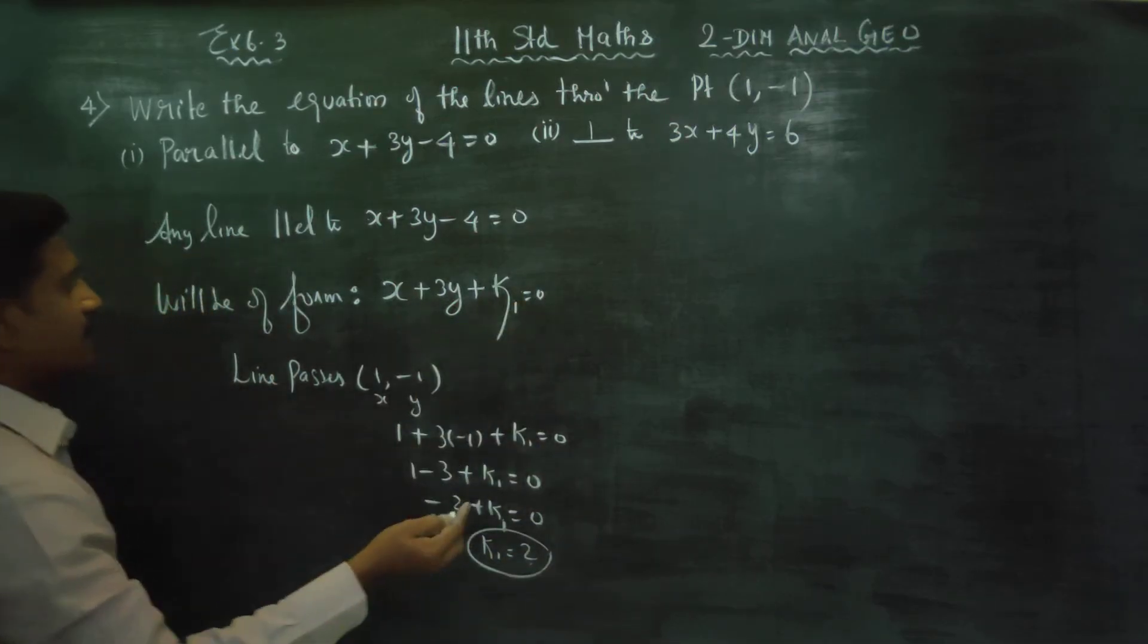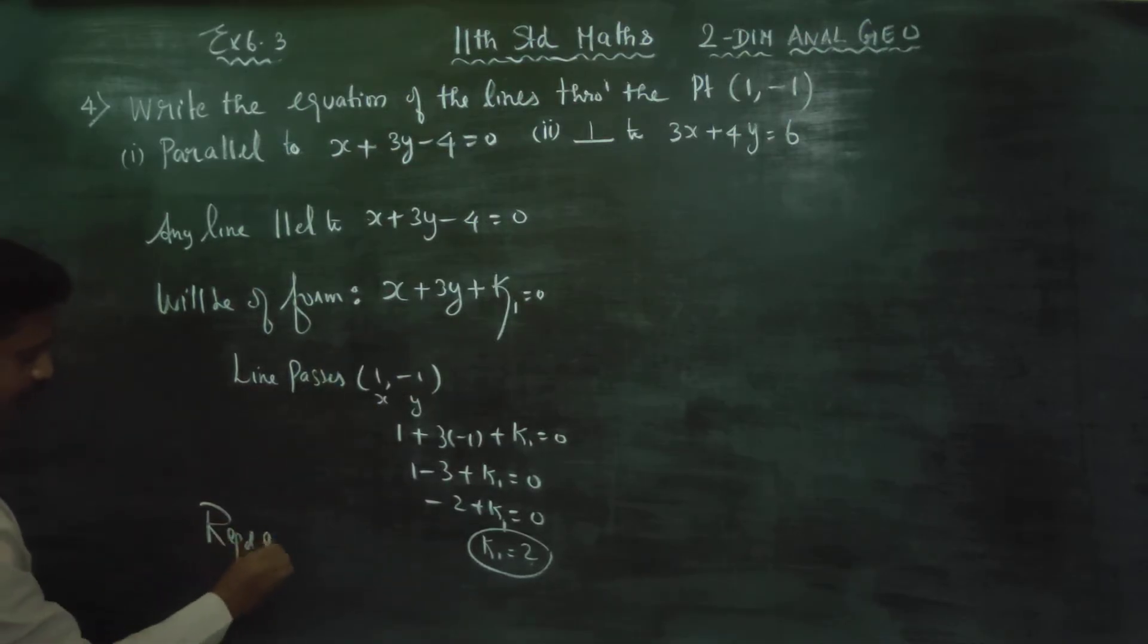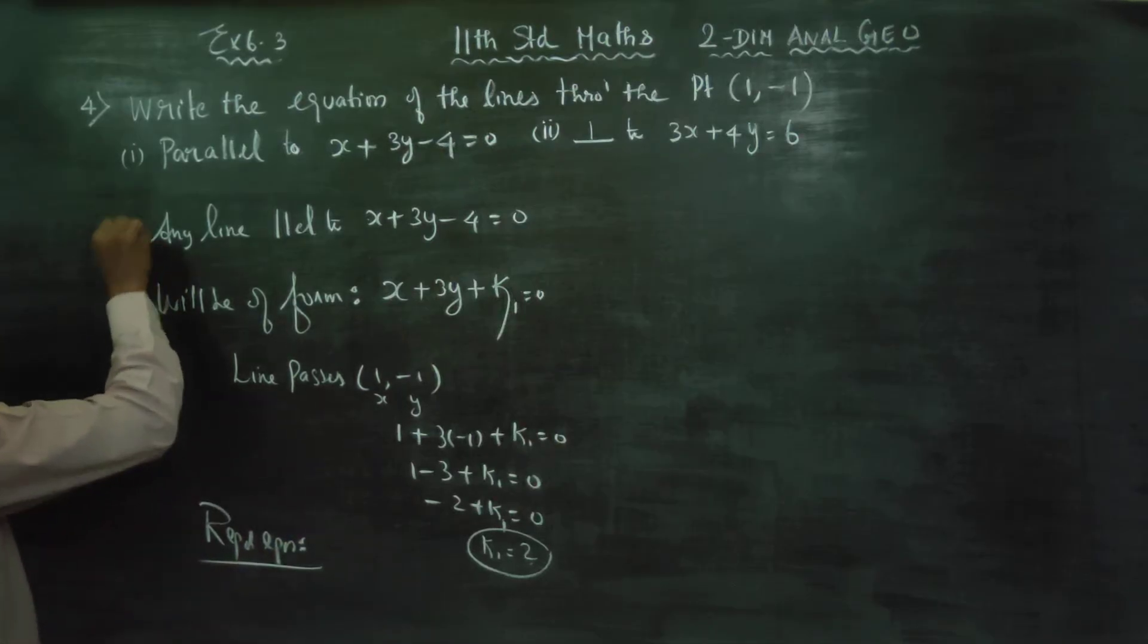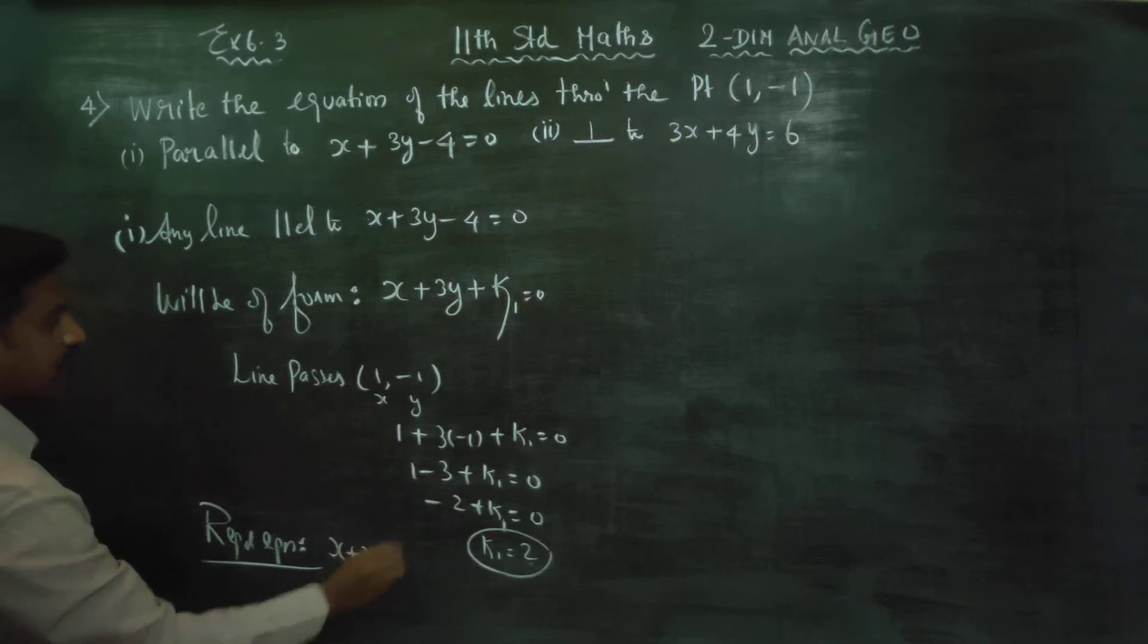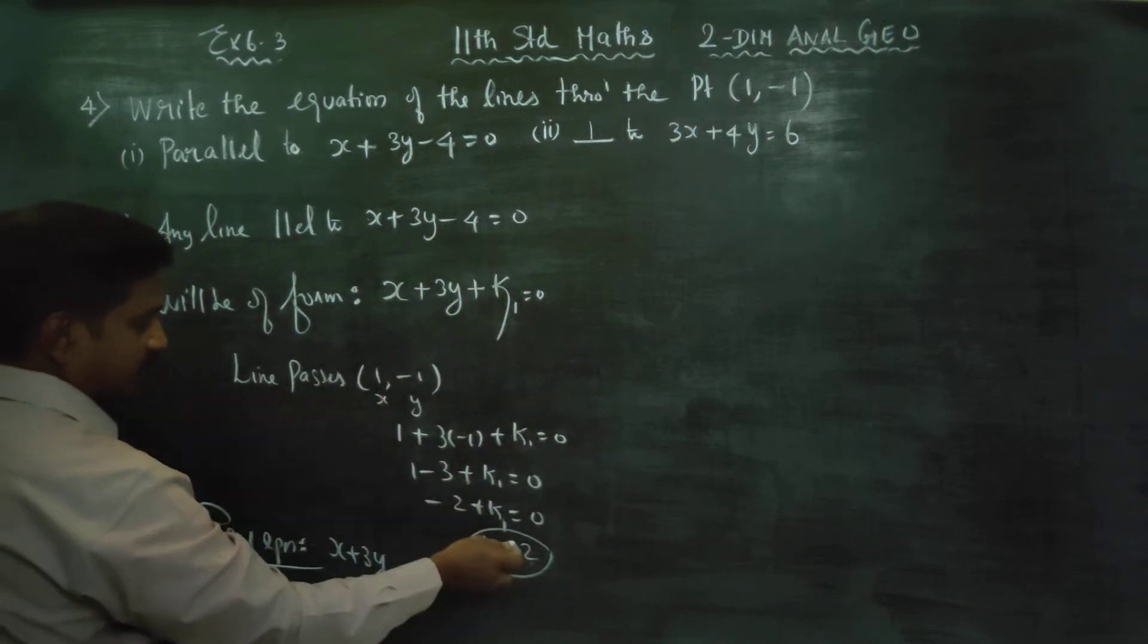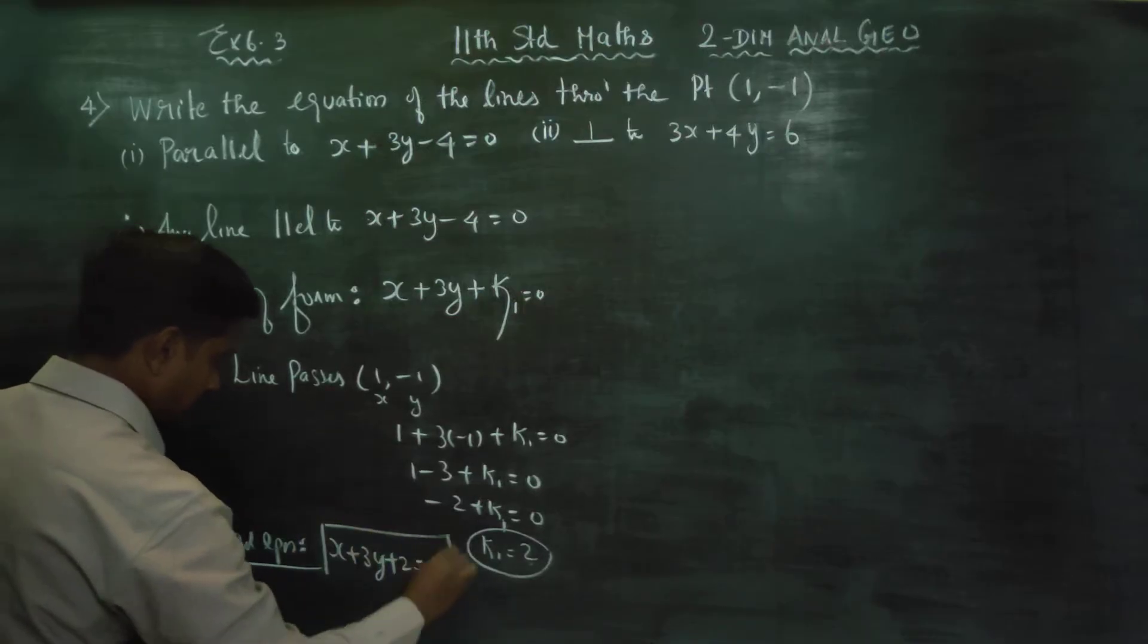Substituting the line, therefore the required equation will be: x plus 3y, instead of k1, you substitute plus 2 equals 0. This is my required answer.